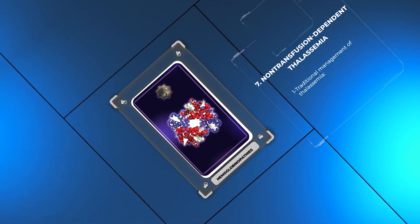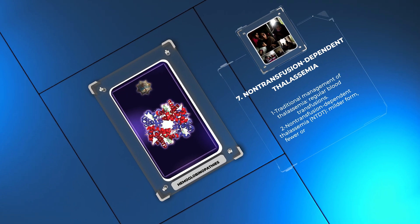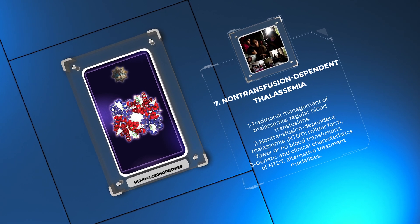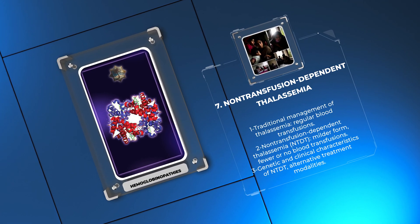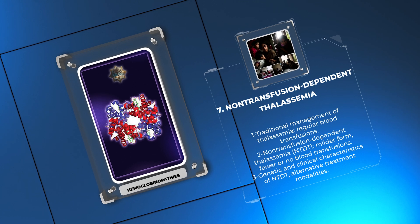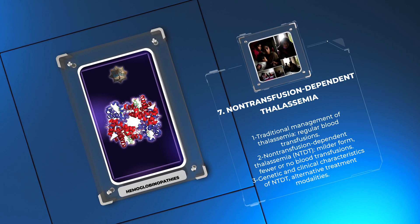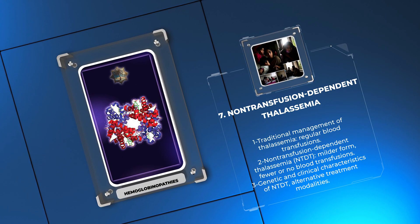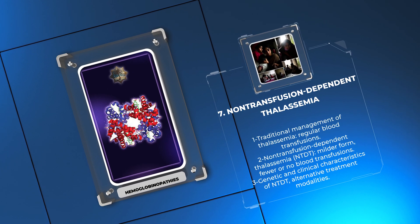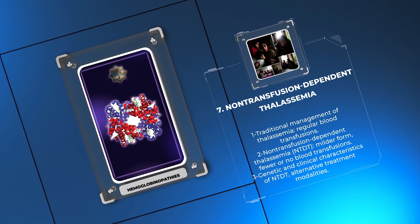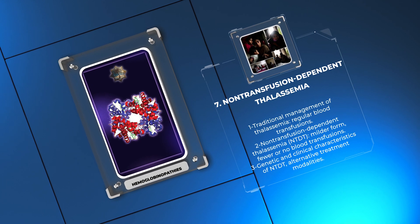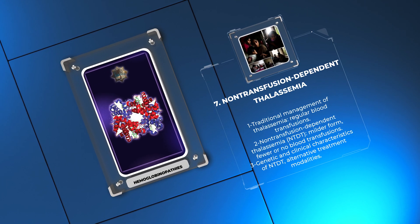Traditional management of thalassemia relies on regular blood transfusions to correct anemia. Non-transfusion-dependent thalassemia, NTDT, represents a milder form of thalassemia where patients require fewer or no blood transfusions. We will explore the genetic and clinical characteristics of NTDT and discuss alternative treatment modalities, such as hydroxyurea, erythropoietin, and iron chelation therapy.